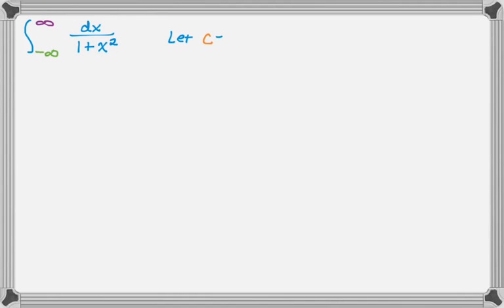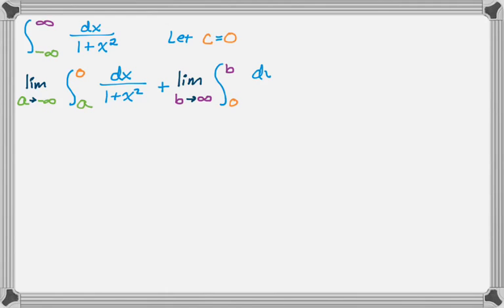So what I'm going to do is I'm going to pick a number. I'm going to pick c equals 0. You pick any number. 0 is the most convenient number in this particular case. And I'm going to break this into two integrals. I'm going to use that property where the integral from a to c plus the integral from c to b is the integral from a to b. So I'm exploiting that fact.